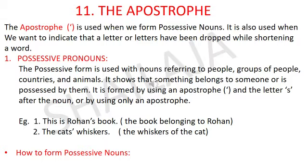Let's see the examples. 'This is Rohan's book' — the book belonging to Rohan — we have added the apostrophe after the noun. See the next one: 'The cat's whiskers.' We have added apostrophe S after the noun. So, the whiskers of the cat.